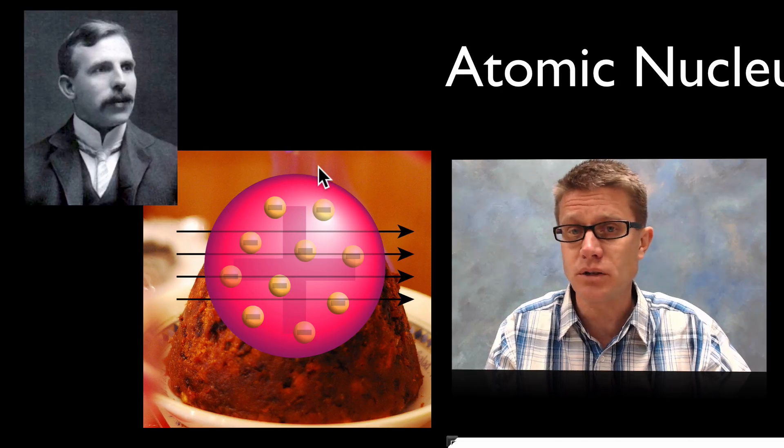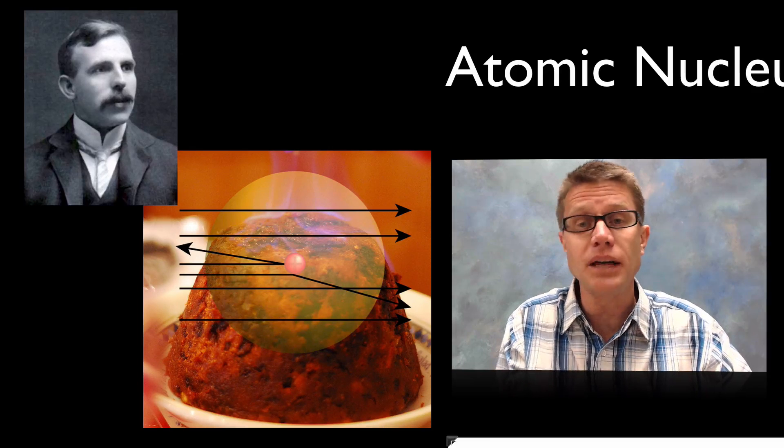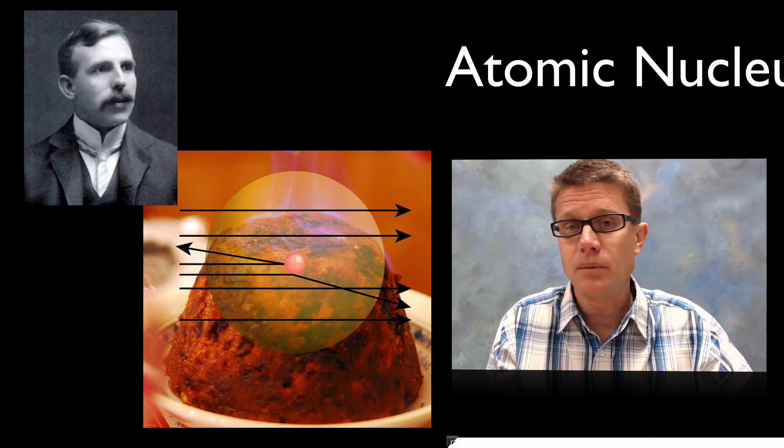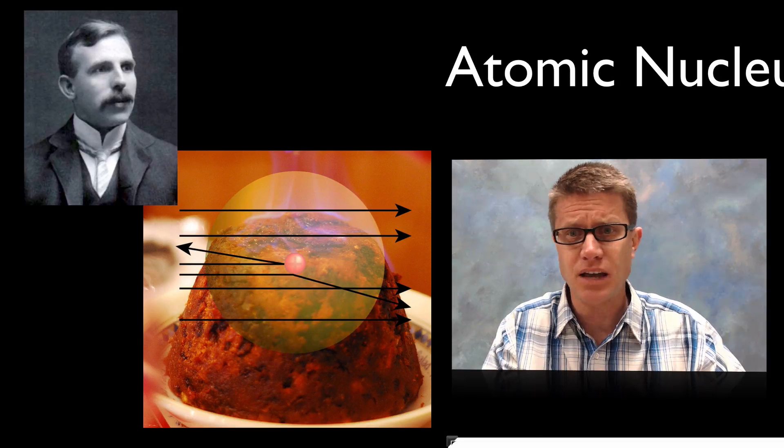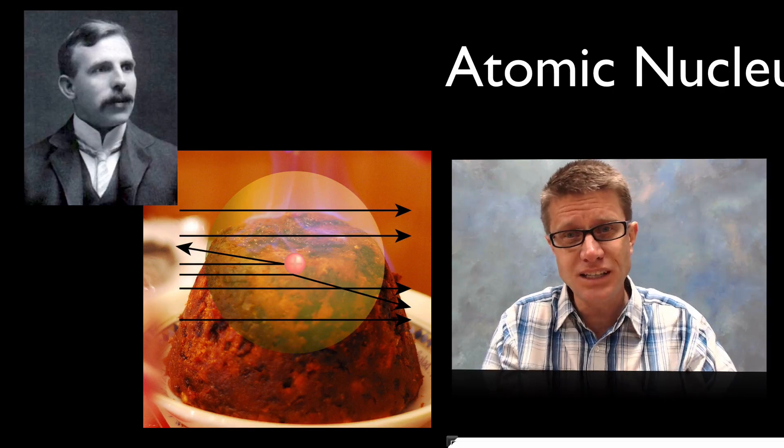But what he found is that these positive charges went straight on through. But occasionally would come shooting right back at them or would be bent in some form. And so he said it was like shooting a shell at a Kleenex and that shell just came shooting back at him. And so what he discovered was this really dense,